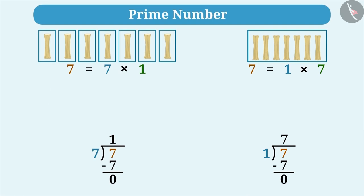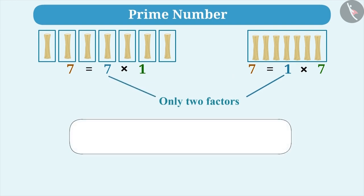Therefore, we can say that number 7 has only 2 factors. First one is 1 and the second one is the number itself. The number having only 2 factors, 1 and number itself, has no other factors is called a prime number.